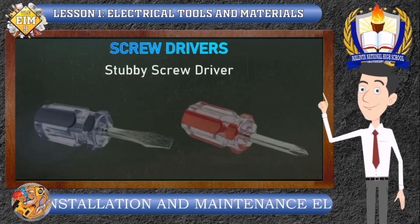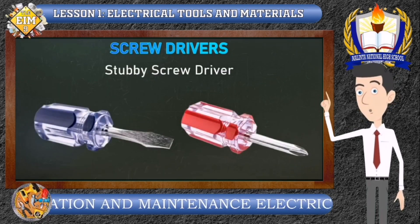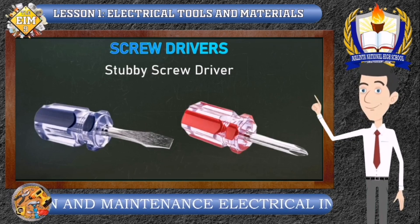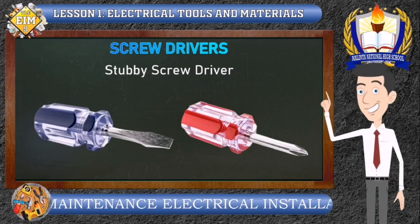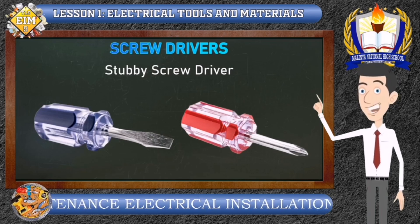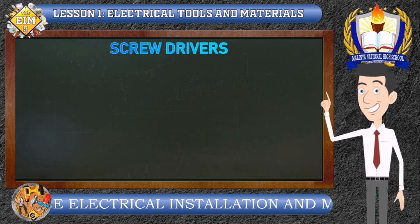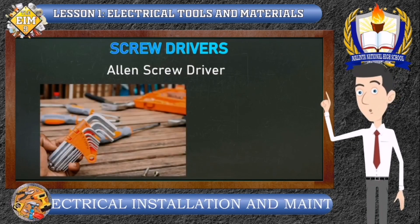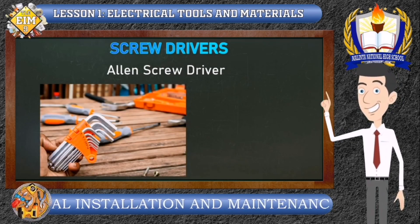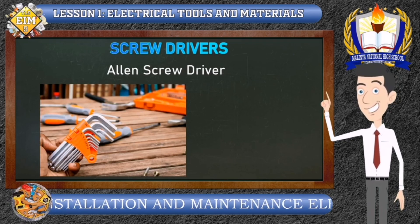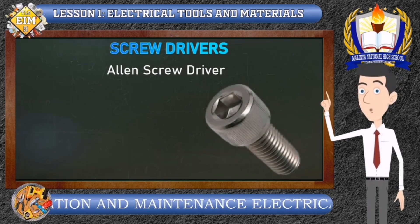Then we have the stubby screwdriver, which comes in either standard or Phillips type with a short shank or blade and a shorter handle, used to turn screws in tight spaces where a standard screwdriver cannot be used. And the last is the Allen screwdriver or wrench, which is shaped like a screwdriver or a wrench. Its function is to drive screws with a hexagonal slot head.